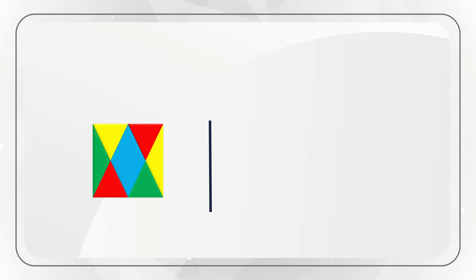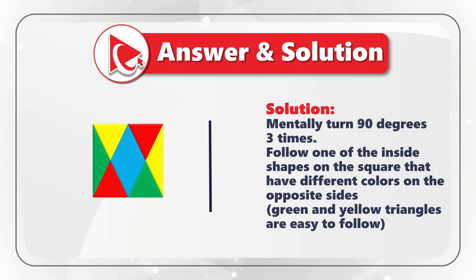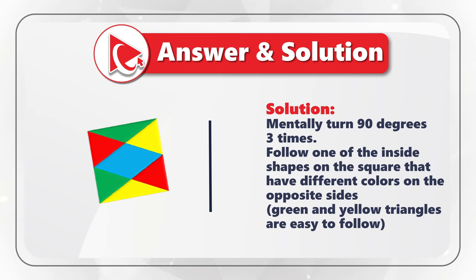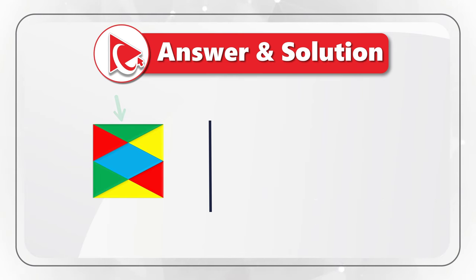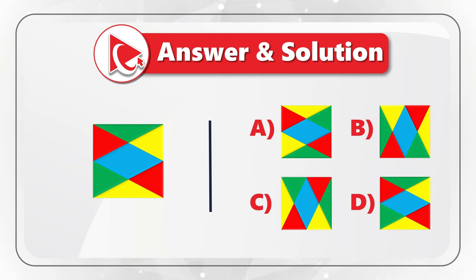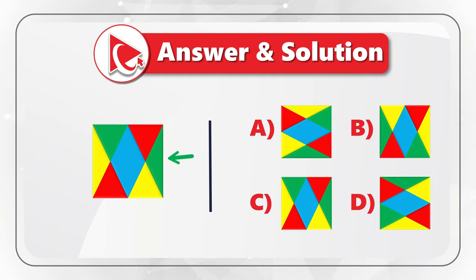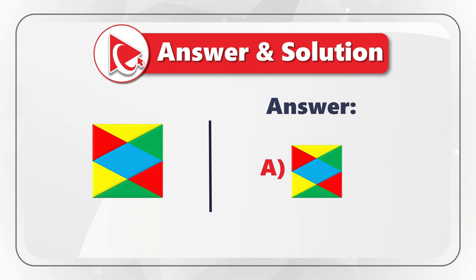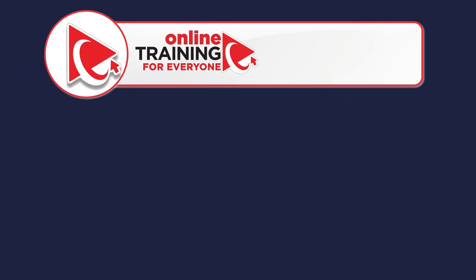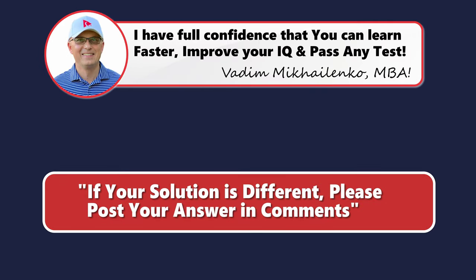Let's do the turning. Starting with the original square, I'll follow the green triangle on the left. After the first 90-degree turn, the green triangle ends up on the top. After the second turn, it's on the right side. And after the last 90-degree turn, the green triangle ends up at the bottom. So the correct choice is choice A, where the green triangle is at the bottom.